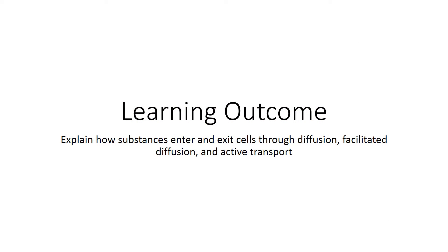Our learning outcome: I want you to be able to explain how substances, like electrolytes and sugars, or even oxygen and carbon dioxide, how these things can exit cells through diffusion, facilitated diffusion, or active transport.